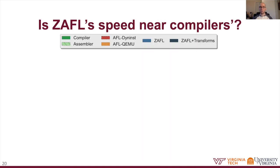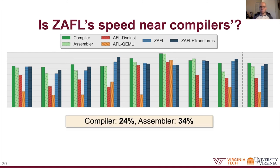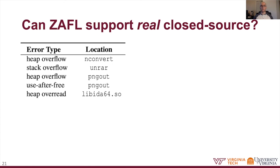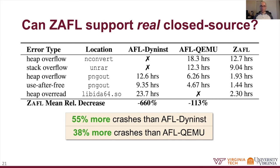Examining whether Zaful's speed is near that of compilers, compared to the compiler-level 24% overhead, Zaful with and without transformations averages about 27–32% overhead—quite faster than AFL Dyninst's 88% and AFL QEMU's 256% overheads. For closed source applications, across five closed source benchmarks Zaful averages 55% and 38% more unique triaged crashes than AFL Dyninst and AFL QEMU. Looking at time-to-exposure for five unique bugs, Zaful is on average 660% faster than AFL Dyninst and 113% faster than AFL QEMU, and even exposed a heap over-read in the commercial binary analysis tool IDA in under two and a half hours, when the closest competitor found it in over 23 hours.